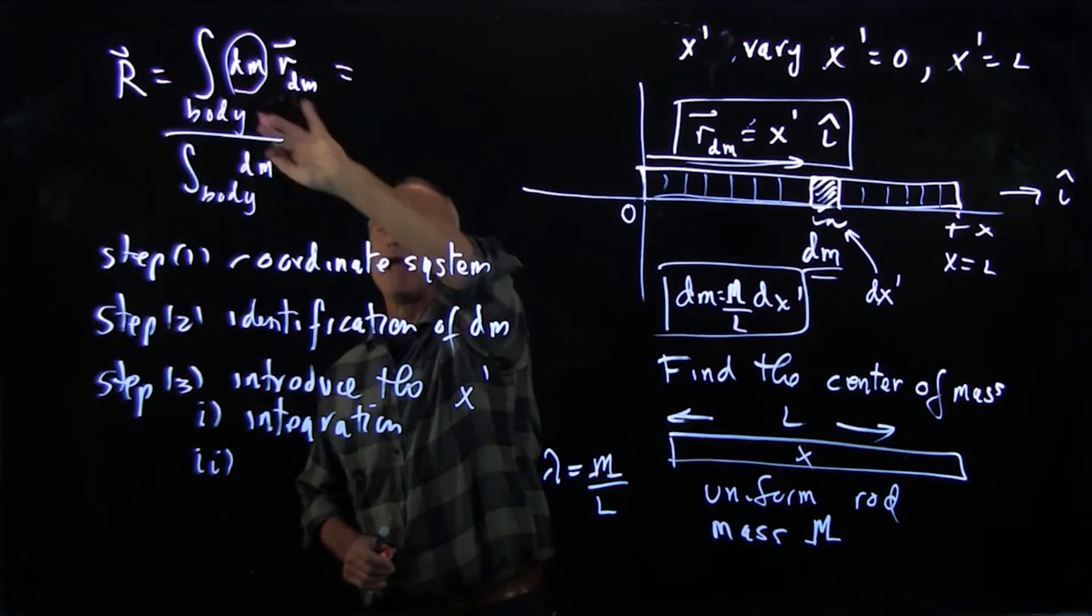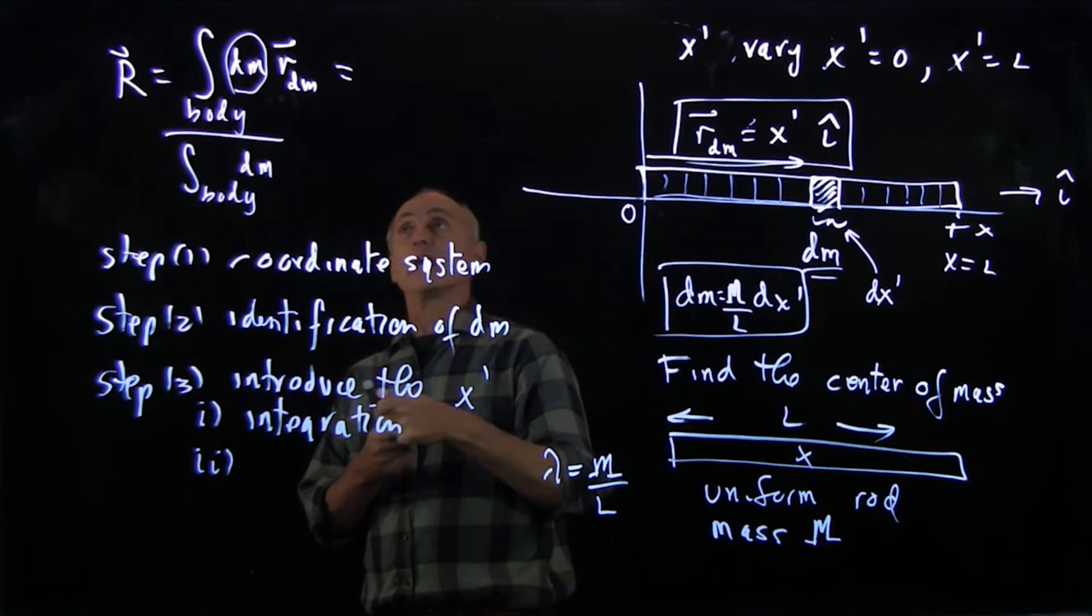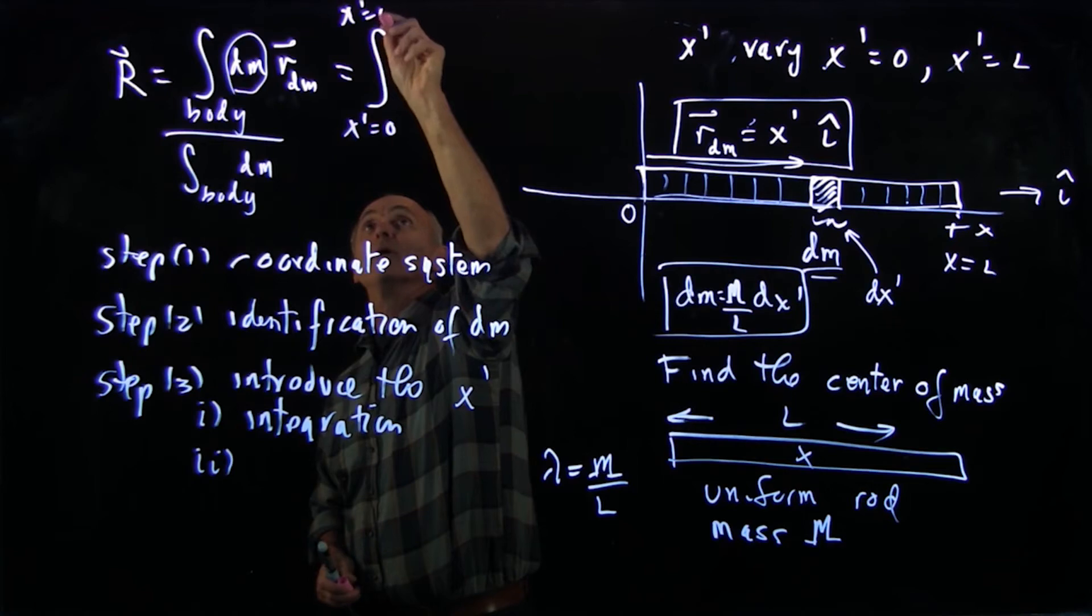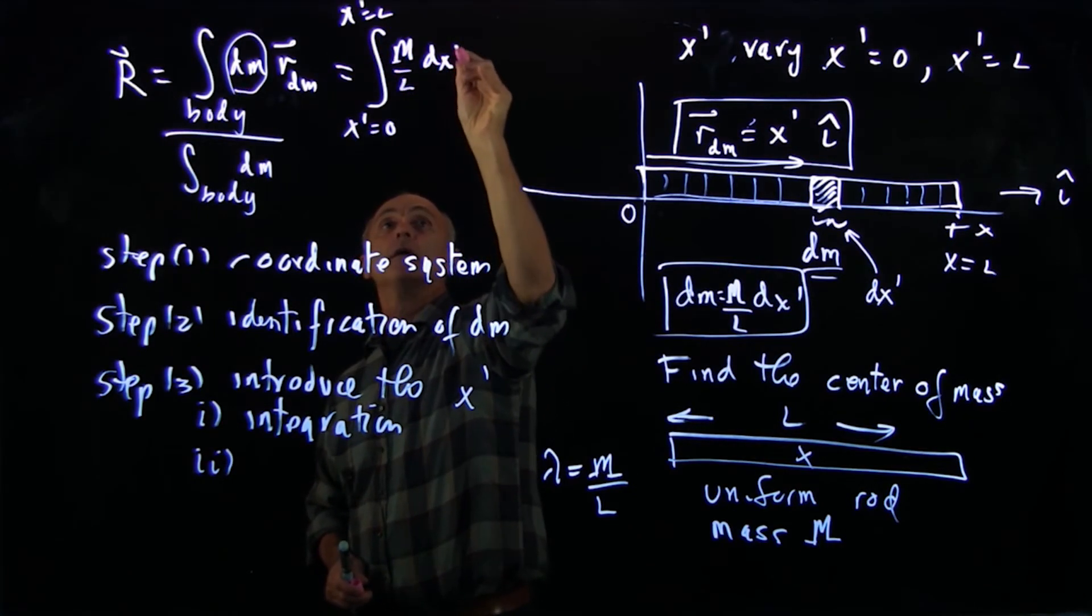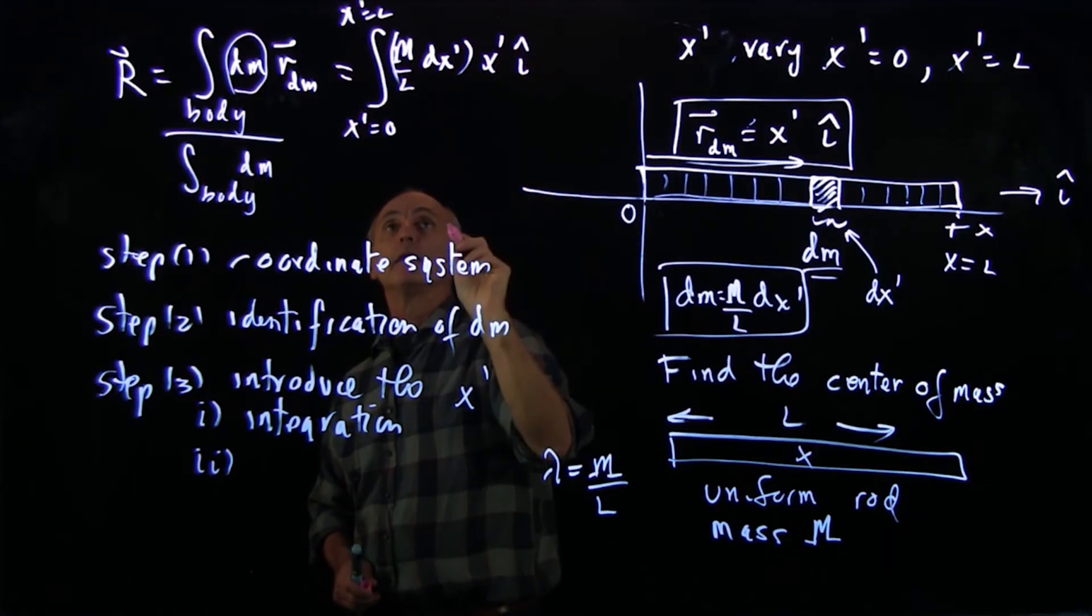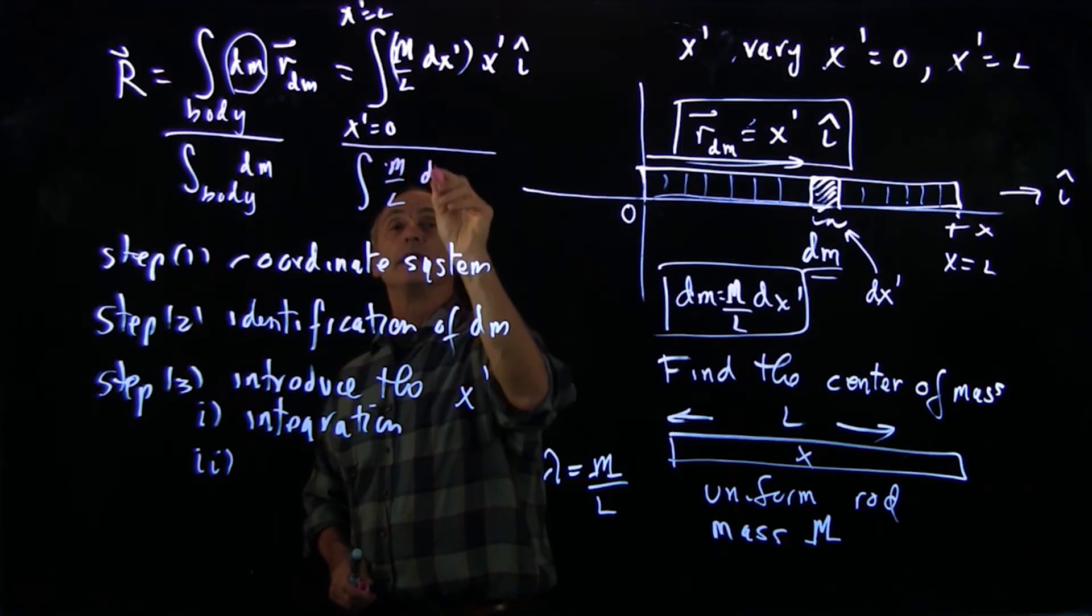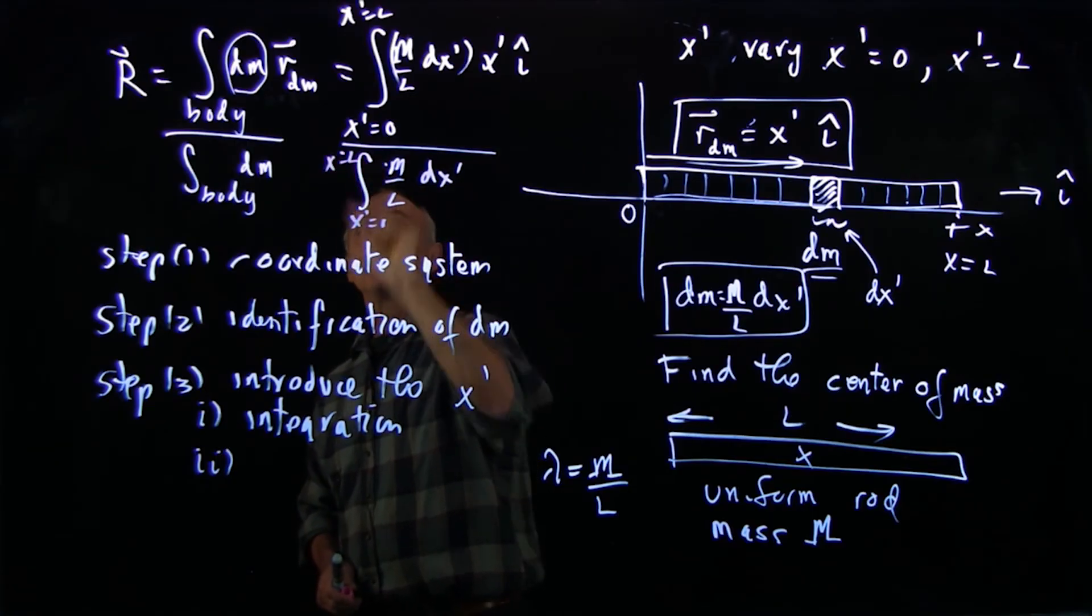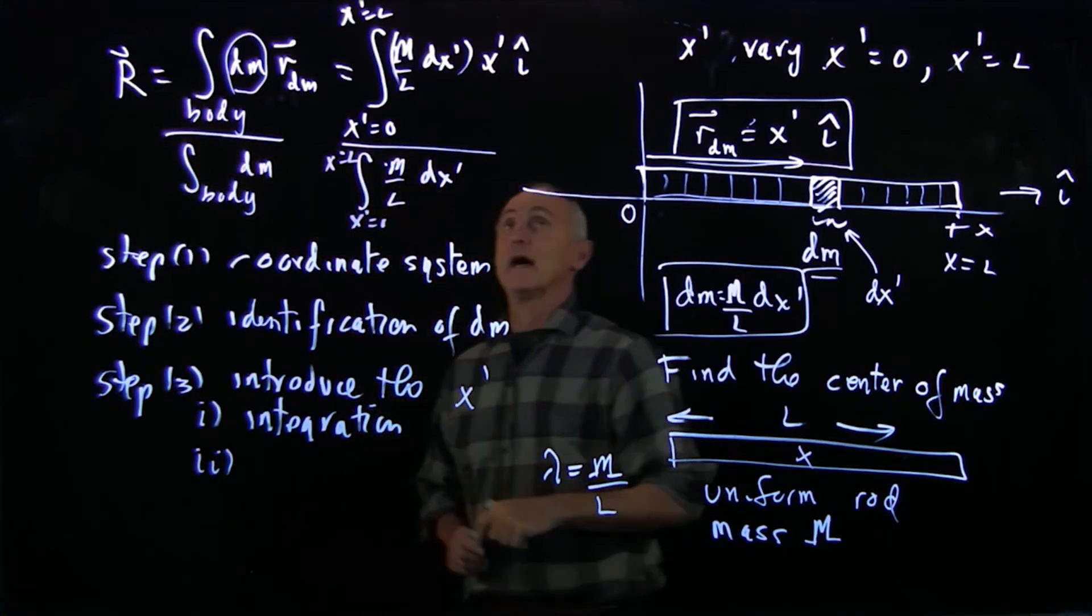So I have two places where my integration variable has been introduced. And now I can write up every piece in this integral. So let's now indicate that we're integrating from x prime equals 0 to x prime equals l. dm is m over l dx prime. And our vector is x prime i hat. And downstairs, it's just m over l dx prime, from x prime equals 0 to x prime equals l. And that's how I set up the integral for the center of mass.